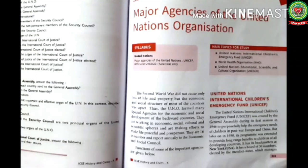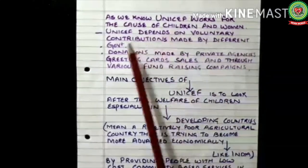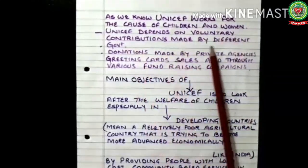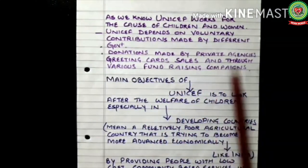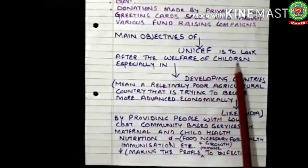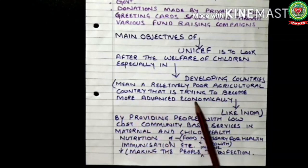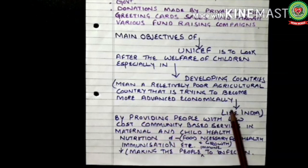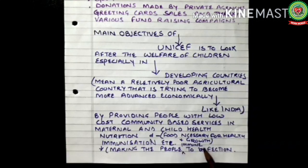The main functions of some of the appointed agencies we are going to discuss: UNICEF works for the cause of children and women. UNICEF depends on voluntary contributions made by different governments, donations made by private agencies, greeting card sales, and through various fundraising campaigns. The main objective of UNICEF is to look after the welfare of children, especially in developing countries — relatively poor agricultural countries trying to become more advanced economically, like India — by providing people with low-cost community-based services in maternal and child health, nutrition, and immunization.